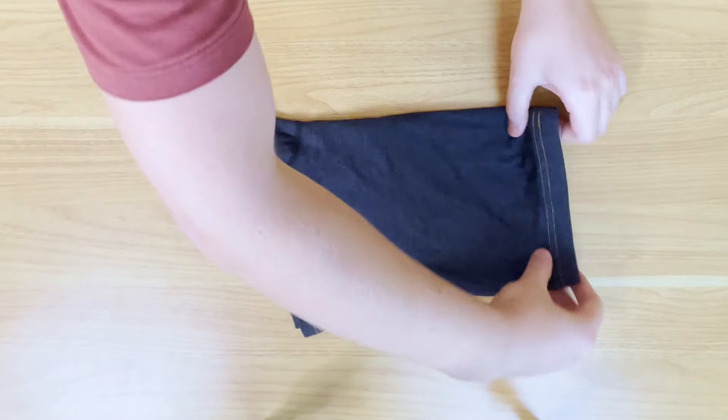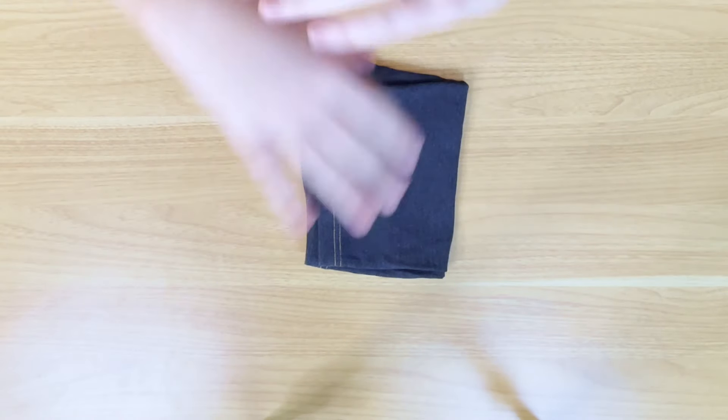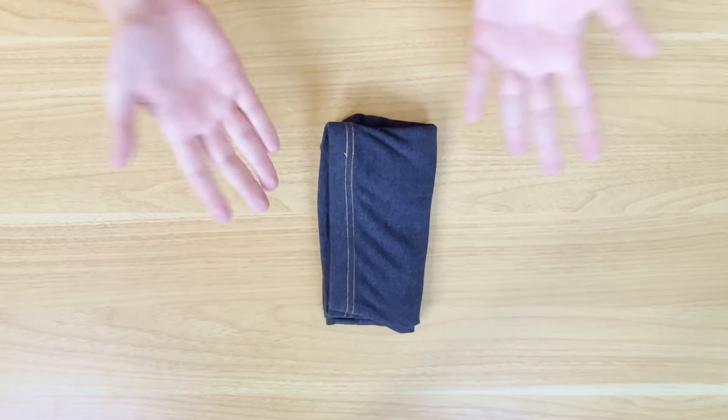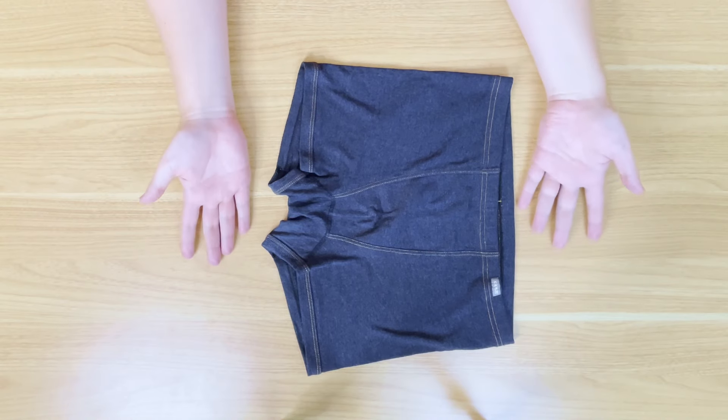Just start by laying the boxer briefs flat with the front side facing up, and then we fold them over from side to side in half and repeat again from top all the way down to the bottom like so. And now we can stack them on top of each other. Super easy, right? But it's not so space saving. It's not really organized either, but it's a quick way to do it.